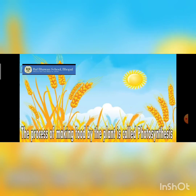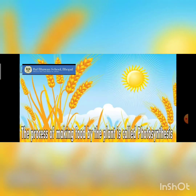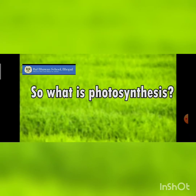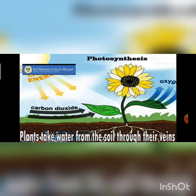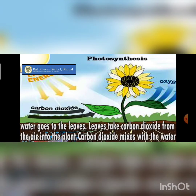But plants do not depend on anyone for their food — they make their own food by the process of photosynthesis. In our last classes we already studied that plants take water from the soil and carbon dioxide from the air to make their own food.